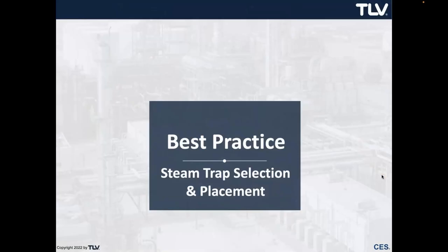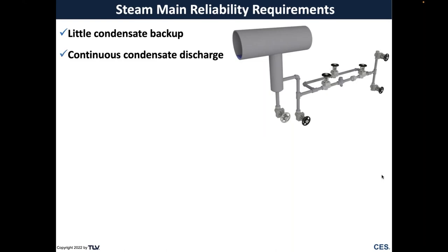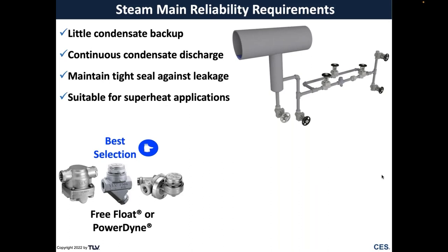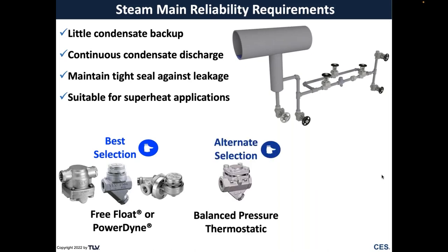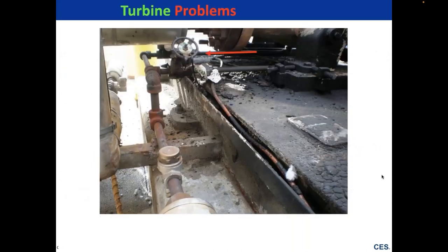Steam main reliability requirements: we want little condensate backup, achieve continuous discharge, maintain a tight seal against steam leakage, and suitability for superheat applications where appropriate. Let your trap vendor make the best selection. Even with TLV models, we have alternate selections — for example, we make a very powerful bimetallic trap, but we would never use that for steam mains; it's used for different applications.